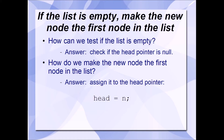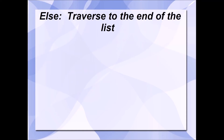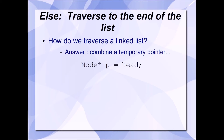Here is a statement in C++ that does that. Otherwise, if the list is not empty, then we need to traverse to the end of the list. To traverse a linked list, we use a temporary pointer — here's an example in C — where we create a new pointer, in this case we'll call it P, and we initialize it with the contents of the head pointer. Recall that the head pointer contains the memory address of the first node in the list, or null if it's an empty list.